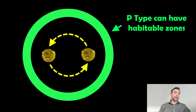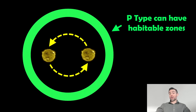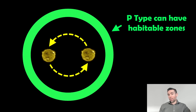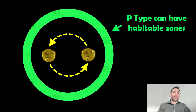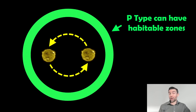Interestingly, both orbit types can have habitable zones. A P-type can have a habitable zone — far enough from both stars to have the right temperature for liquid water, similar to where Earth is in our solar system. It isn't going to be symmetric — it might be an odd shape or elongated depending on the general setup. But a planet can still orbit the outside of both stars, remain stable, and be at the right temperature to support life. That's quite exciting.